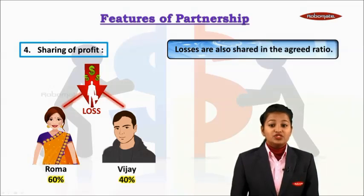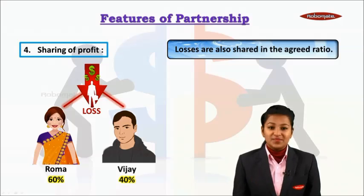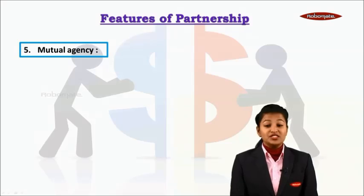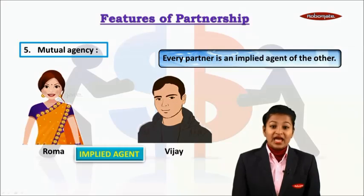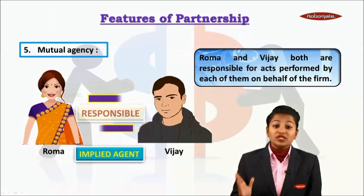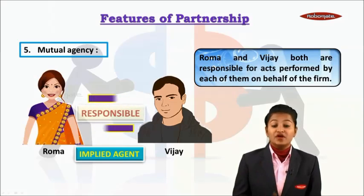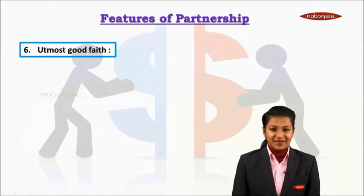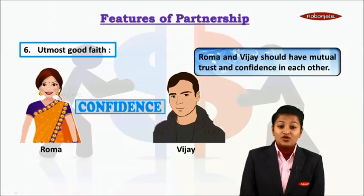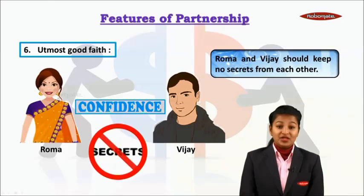Losses are also shared in an agreed ratio similar to the profit-sharing ratio, meaning Roma bears 60% of losses and Vijay bears 40%. The fifth feature of partnership is mutual agency — every partner is an implied agent of the other. Roma and Vijay are both responsible for acts performed by each of them on behalf of the firm, RV Cakes. The sixth feature is utmost good faith — Roma and Vijay should have mutual trust and confidence in each other and should keep no secrets from each other.